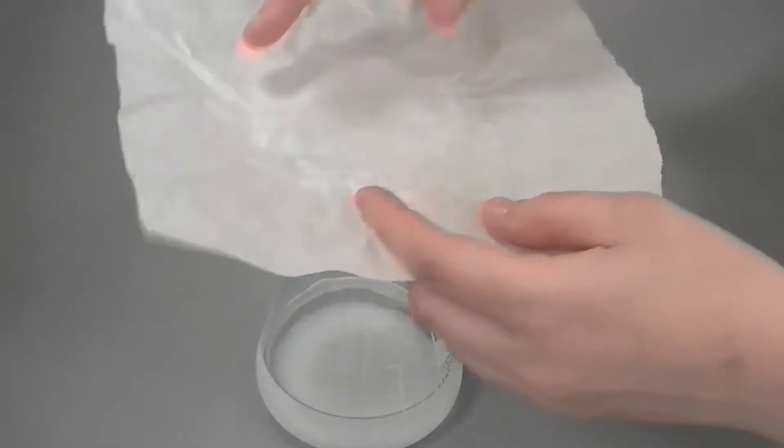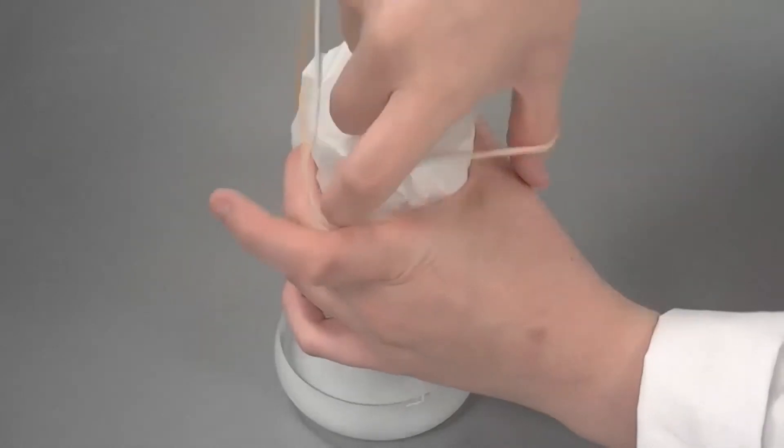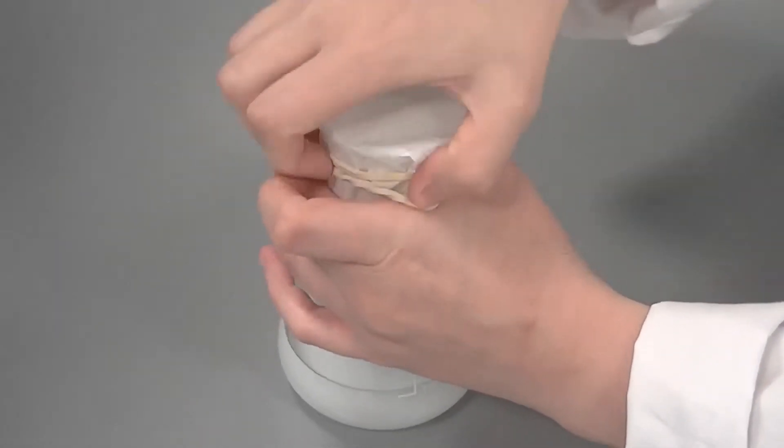Cover the top of the flask with greaseproof paper and seal with an elastic band. This is to prevent evaporation when microwaving.